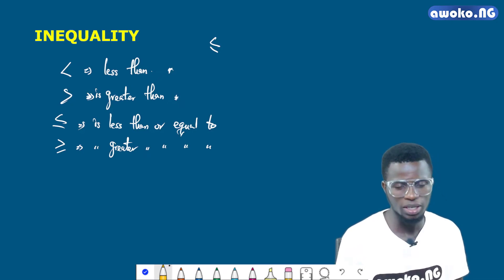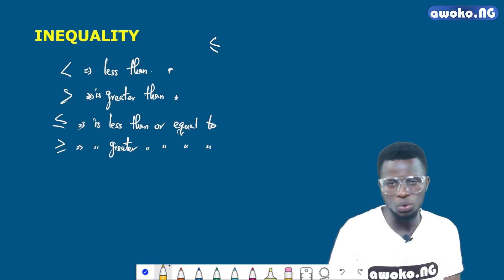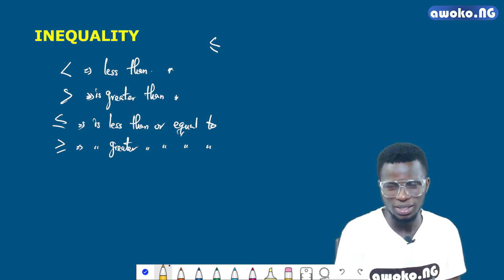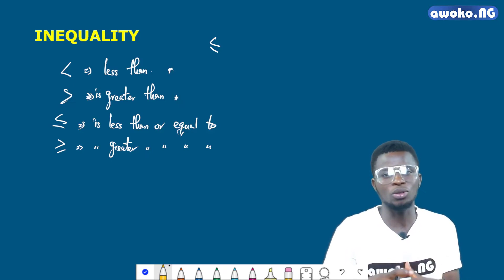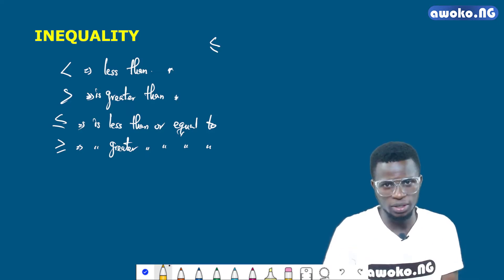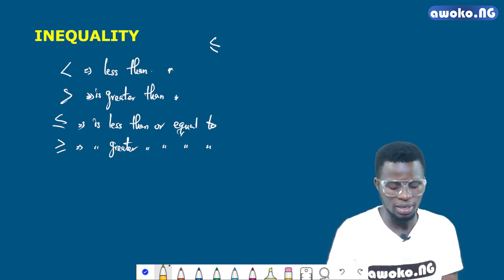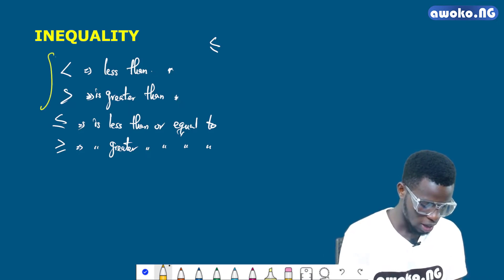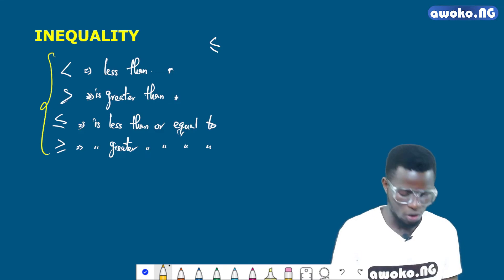The approaches or steps involved in solving inequality problems are the same as that of linear equations. The only difference is that the equality sign is changed to the appropriate inequality signs in the solution. So when we multiply, divide, or perform any operation in inequality, we can take reference from our knowledge of equality. The inequality signs we use are less than, greater than, less than or equal to, or greater than or equal to.